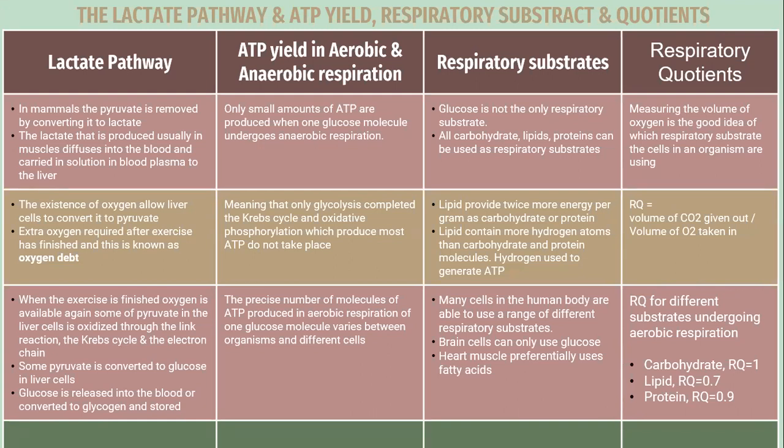The respiratory quotient (RQ) is a measure of which respiratory substrates a cell or organism is using. The formula to calculate RQ is: volume of carbon dioxide given up divided by volume of oxygen taken in. The RQ values for different substrates undergoing aerobic respiration are: carbohydrate — RQ equals 1; lipid — RQ equals 0.7; and protein — RQ equals 0.9.